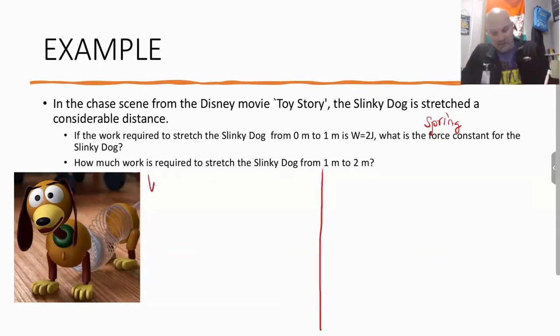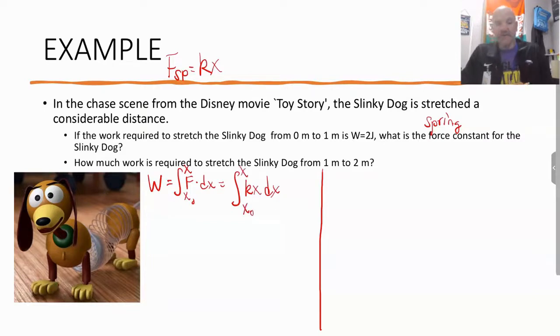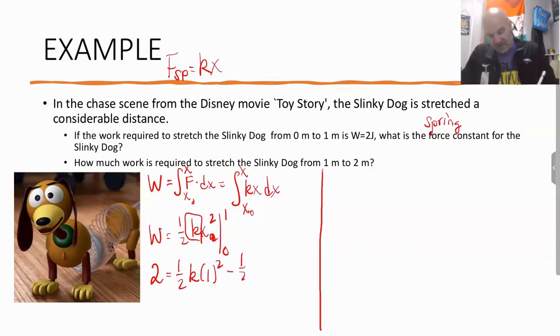So the first thing we need to do is find k, the spring constant. We would do work equals the integral from x initial to x of f dot dx. For springs, it's kx. So I'm going to find the integral of kx dx from zero to one. When I take the integral of that, I get one half kx squared. I'm going to evaluate that from zero to one. Two equals one half k times one squared minus one half k times zero squared. Well, that goes away. So you have two equals one half k, or k equals four newtons per meter.